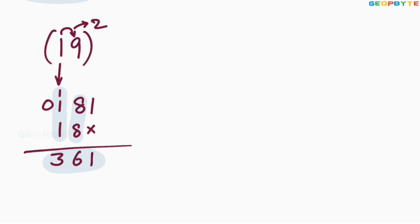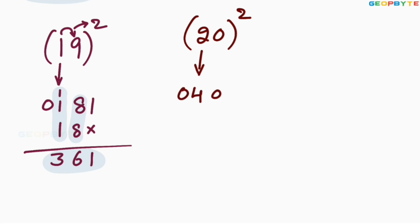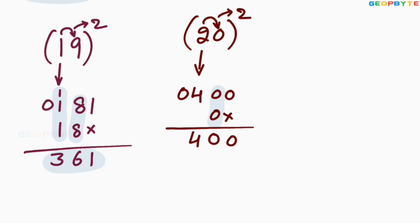Similarly, 20 square: 2 square is 04, 0 square is 00. 2 into 0 is 0, 0 into 2 is 0. Leave the first space, write 0 here. Add these two values: 0, 0 plus 0 is 0, 4. Therefore, 20 square is equal to 400.